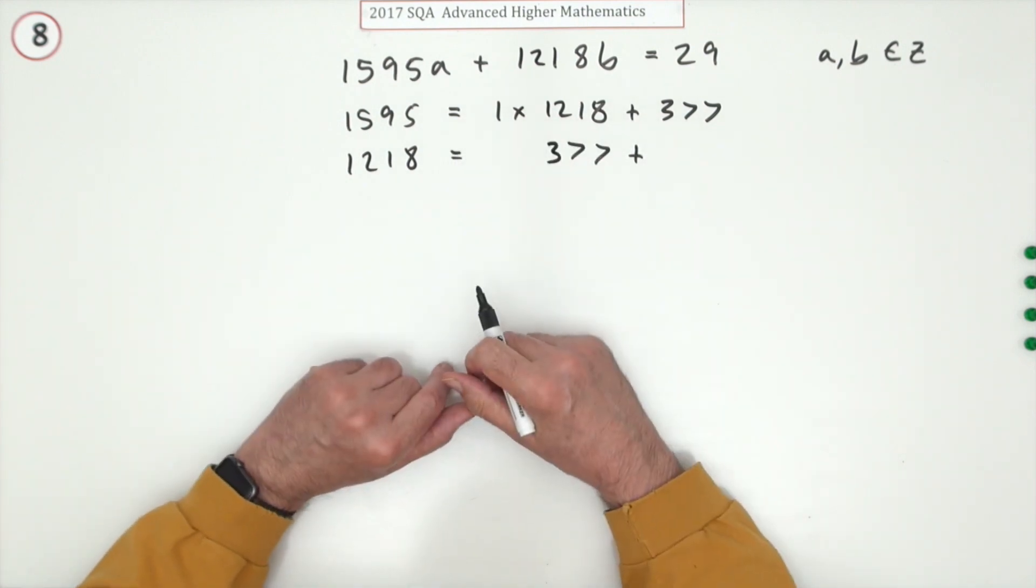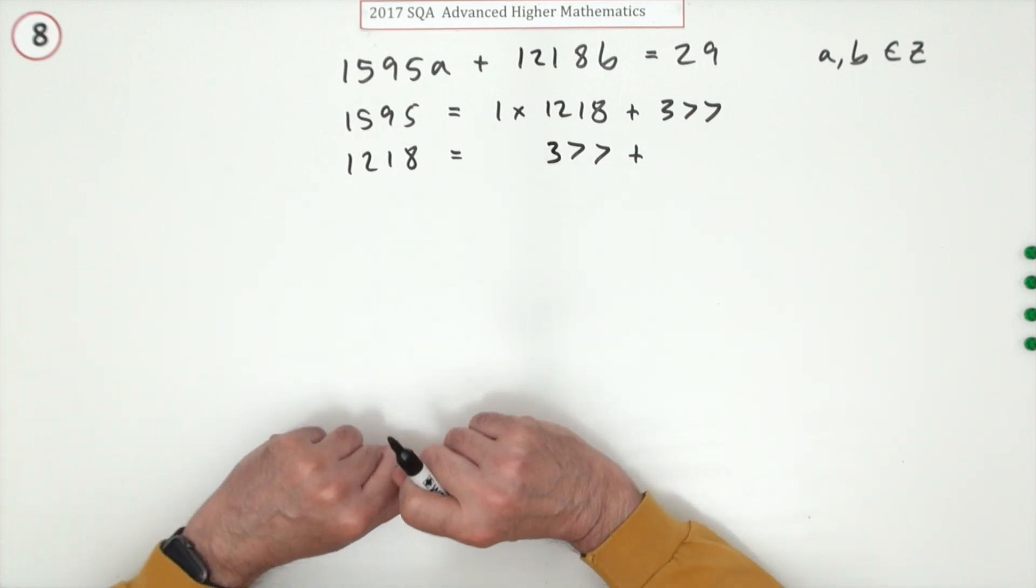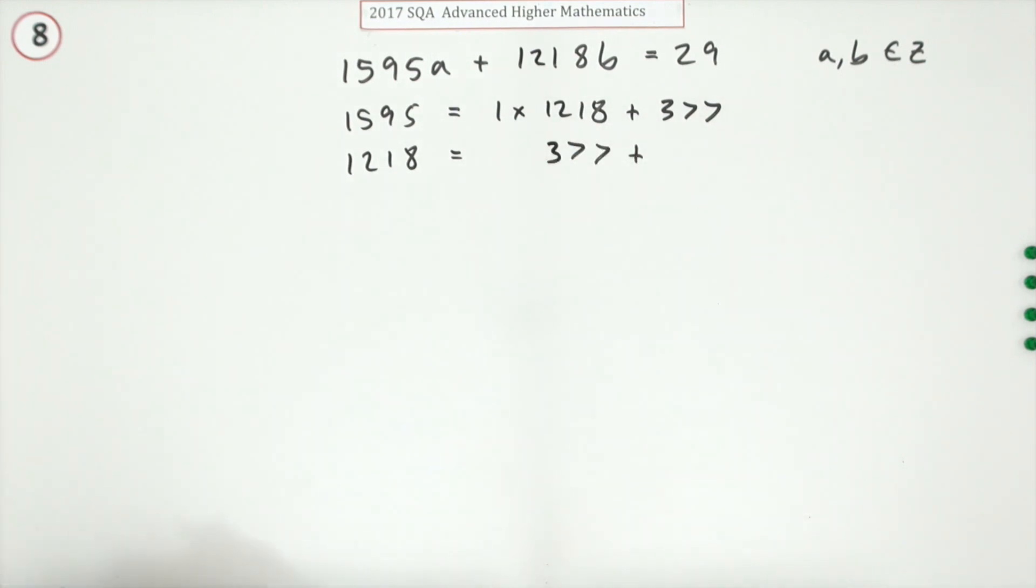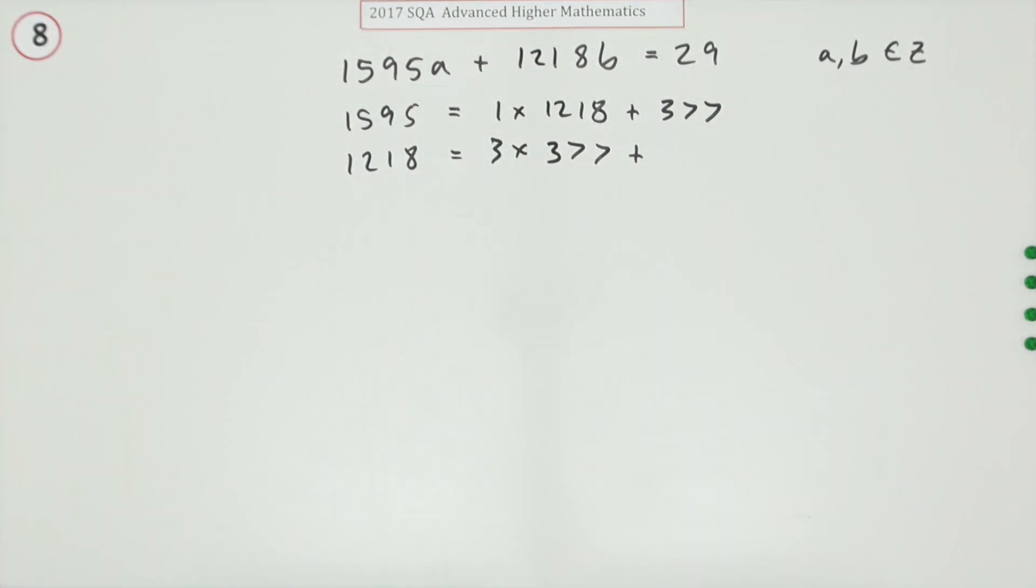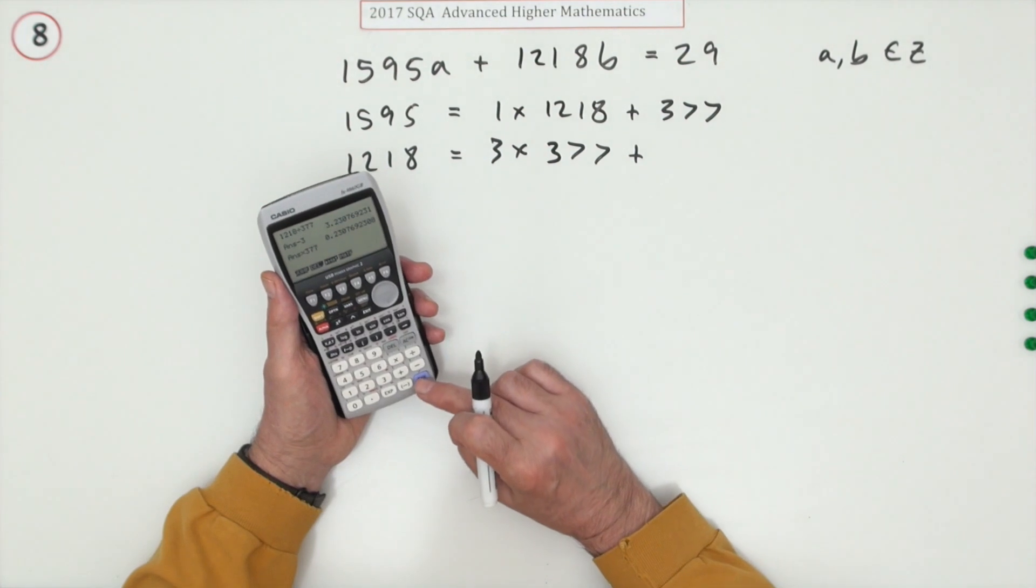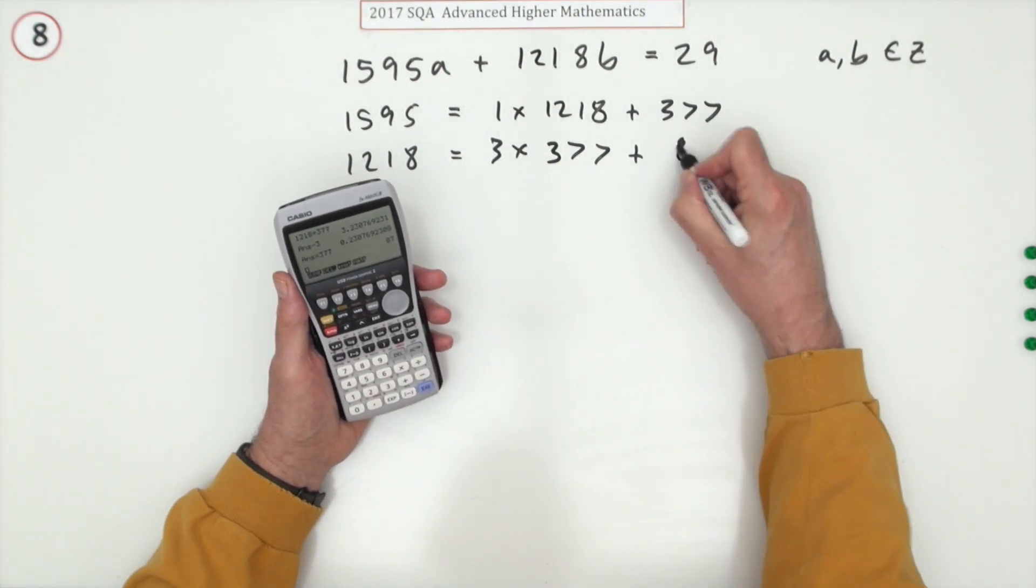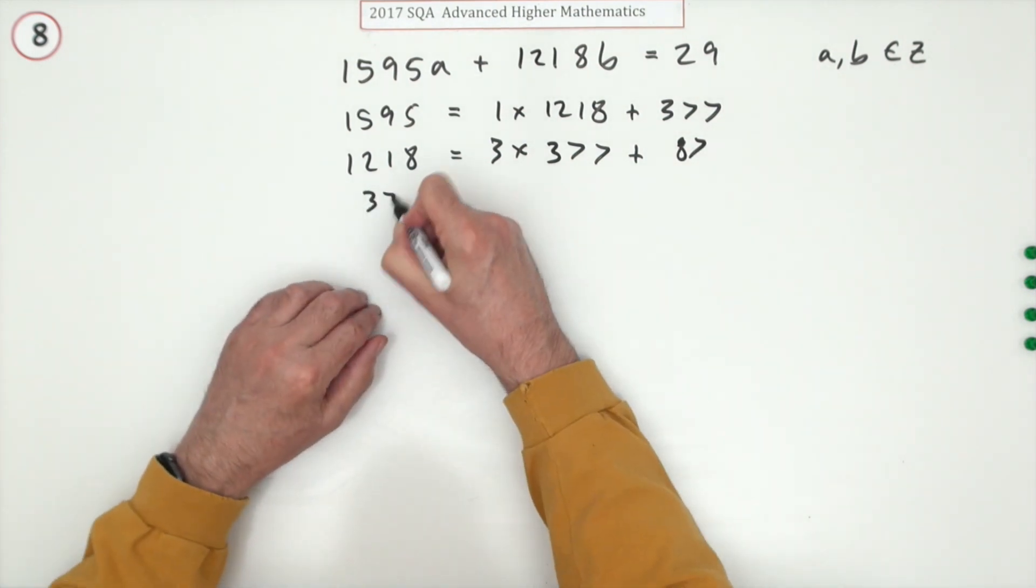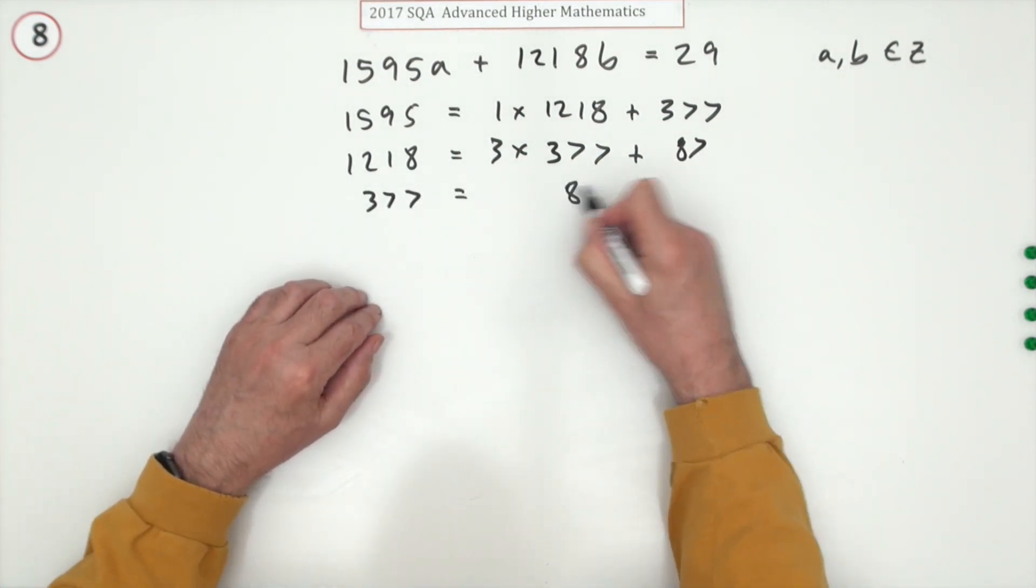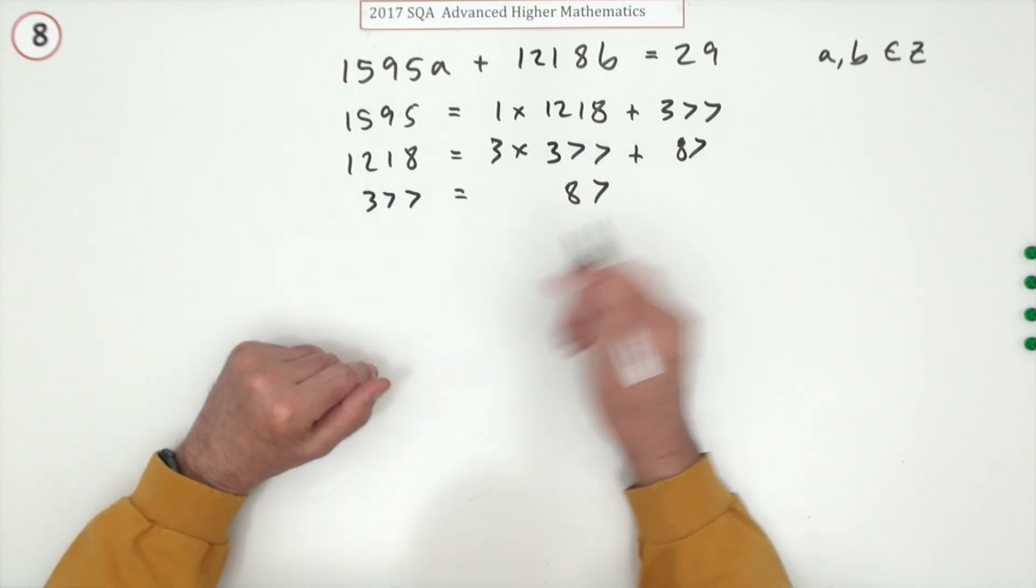If it goes in exactly, then 377 is the greatest common divisor. We'll just divide it in and see. Well it goes in three times but there's a bit left over, so technically that three and multiplying gives you 87 left over.